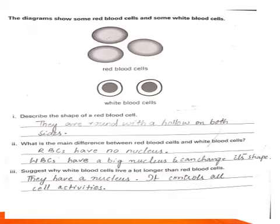Suggest why white blood cells live a lot longer than red blood cells. Because they have a nucleus. It controls all cell activities.